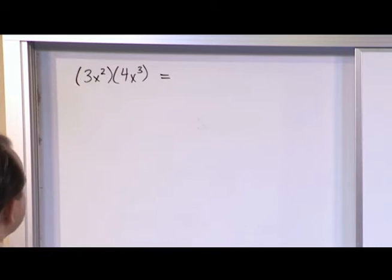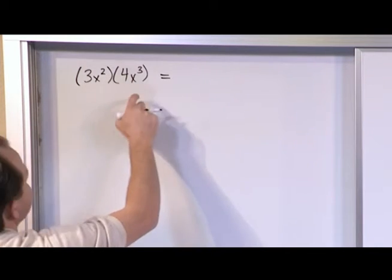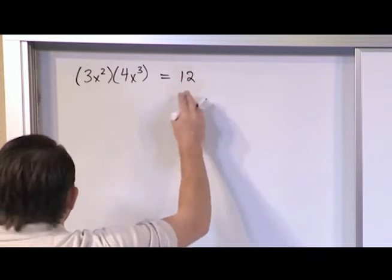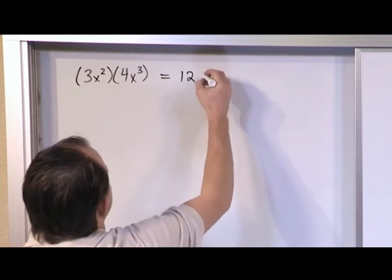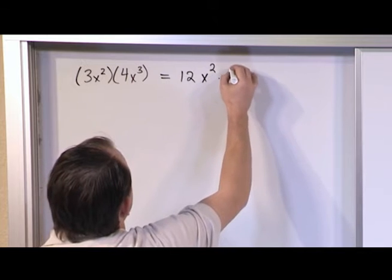So what do you do here? When you have things multiplied together like this, first thing you do is multiply the numbers. 3 times 4 is 12. And then you're still going to have these variables and exponents multiplied. So for now let's just leave it as x² times x³.